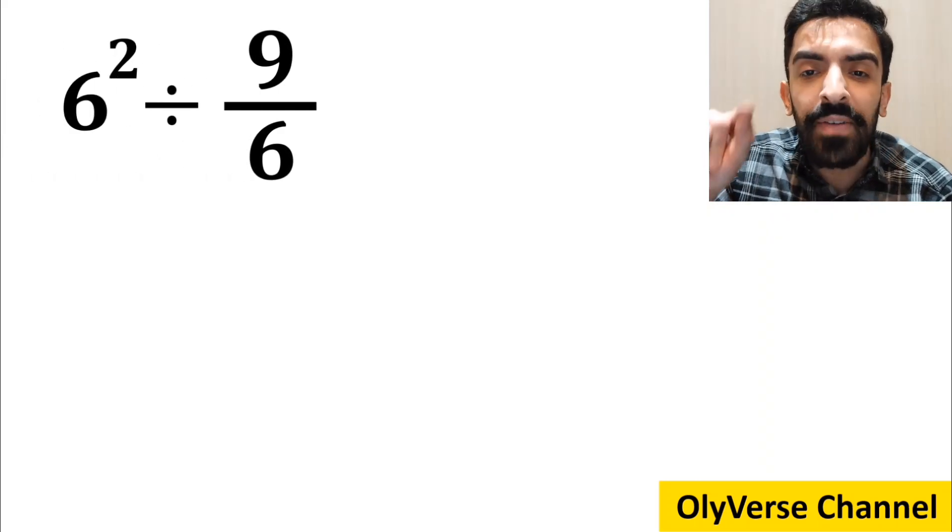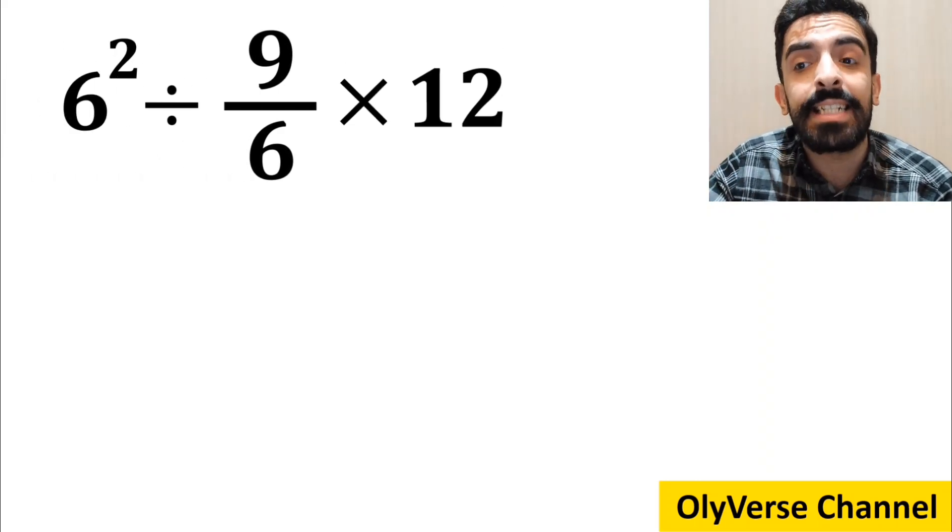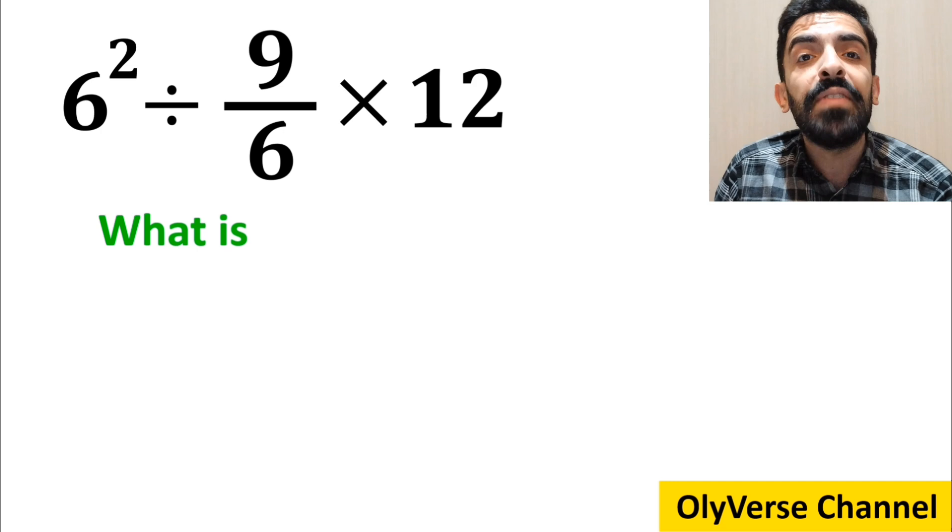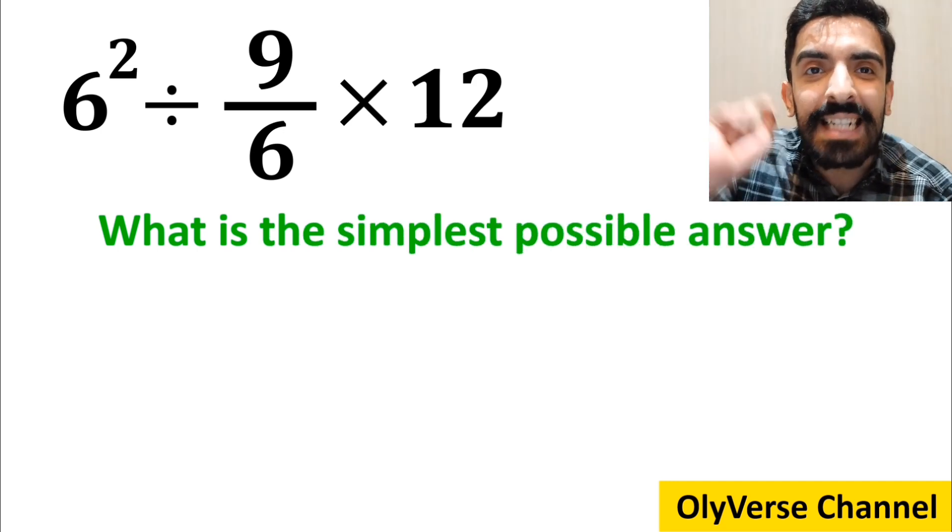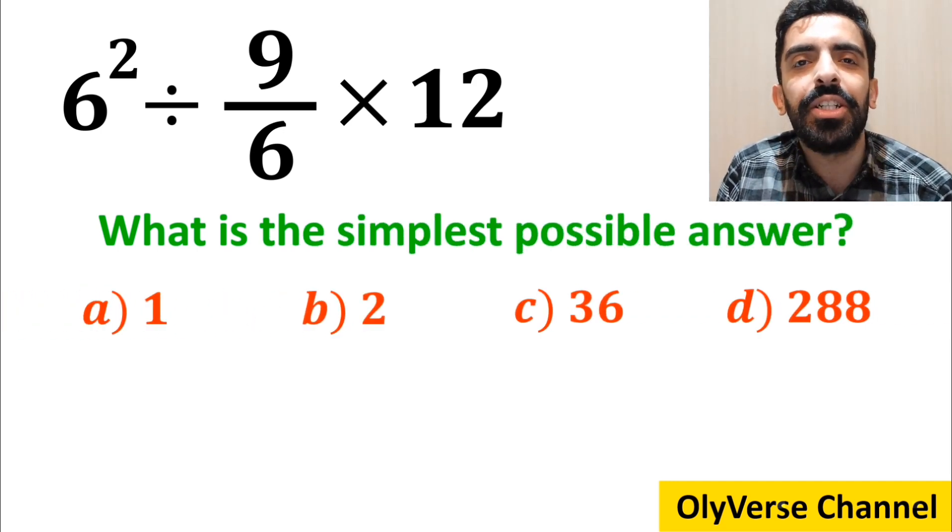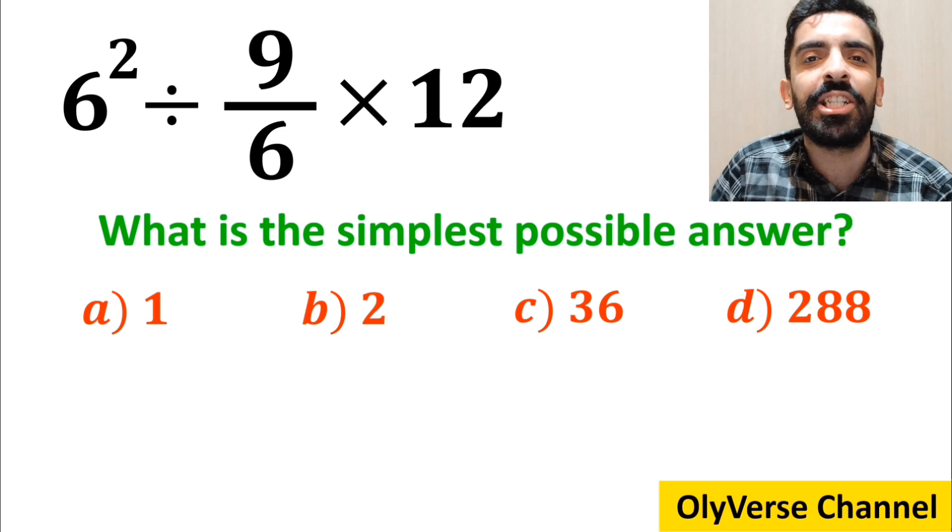If we have the expression 6 to the power of 2 divided by 9 over 6 multiplied by 12, then what is the simplest possible answer for this expression? Which option do you think is the correct answer to this question?